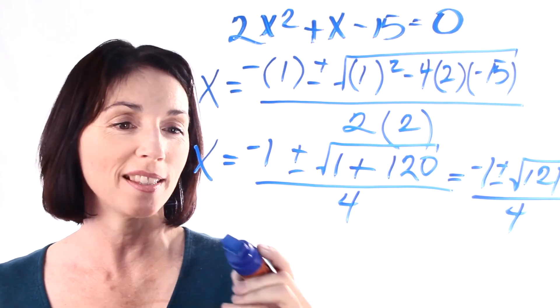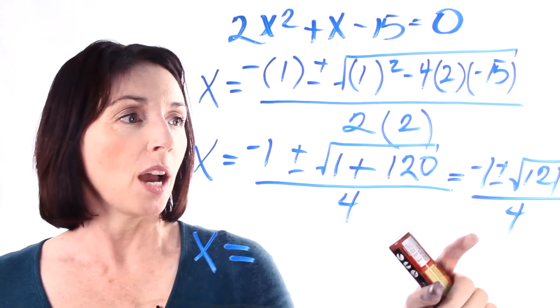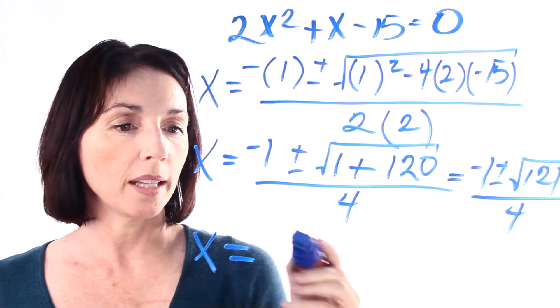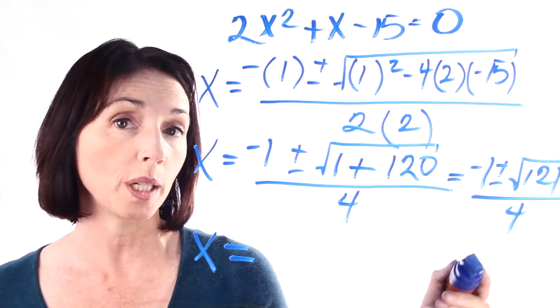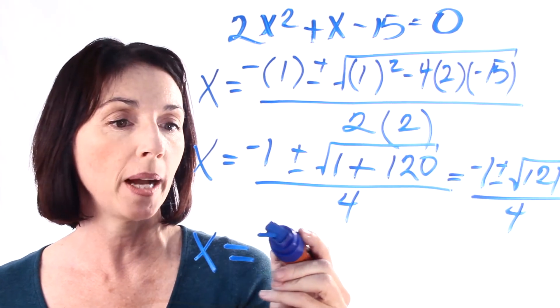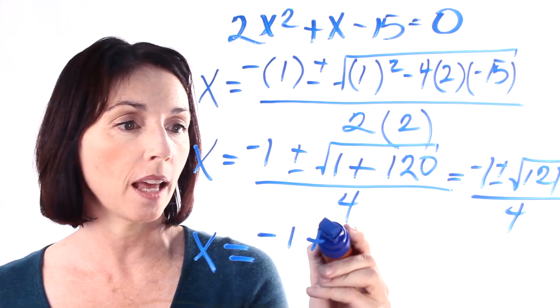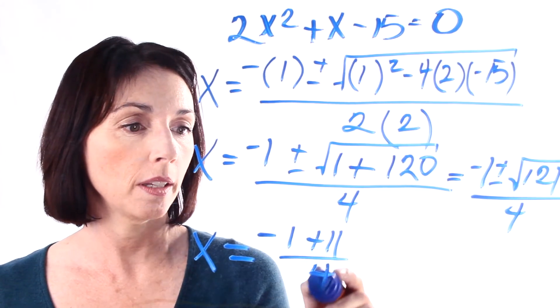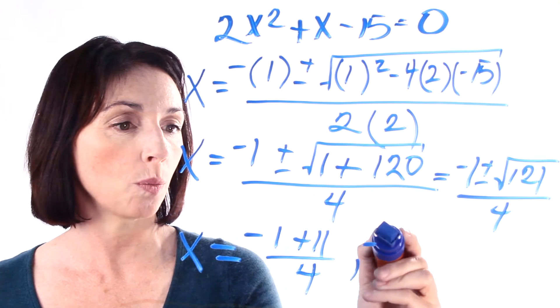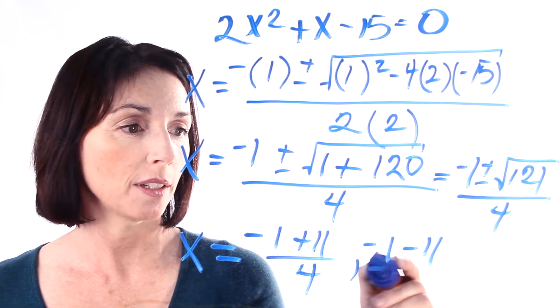Okay, so we're almost there. So x equals, now we're going to do both the plus and the minus. Now the square root of 121 is 11, so we've got minus 1 plus 11 over 4, and minus 1 minus 11 over 4.